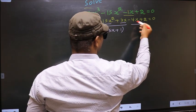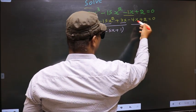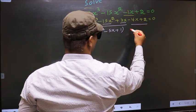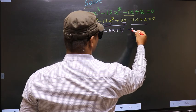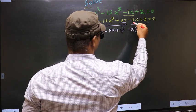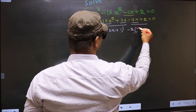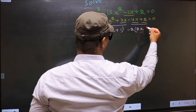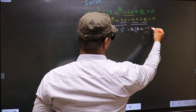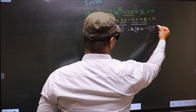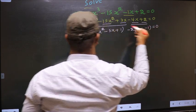In the same way, from these 2 terms what can be taken out common is minus 2. So here you get 2x and here you get minus 1, equal to 0.